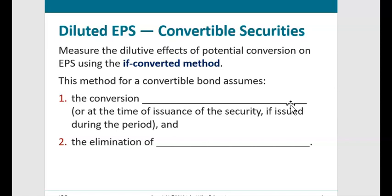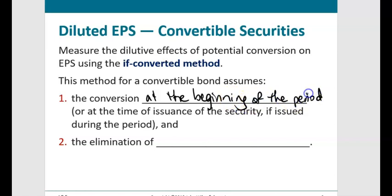We use the if-converted method — what's the worst possible thing that could happen to earnings per share as a common stockholder? The worst case is if everybody who had a convertible security did convert, diluting ownership and entitlement to profits. For a convertible bond, the if-converted method assumes conversion at the beginning of the period, assuming the security was outstanding the entire period. If the bond was issued partway through the year, say June 1st, we assume conversion on that issuance date.